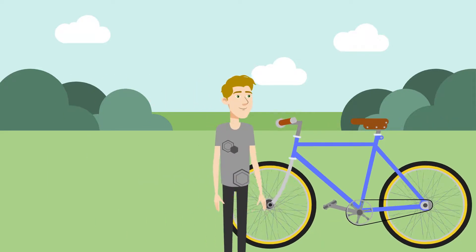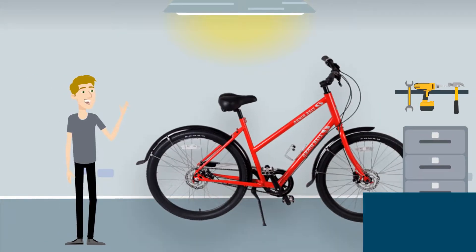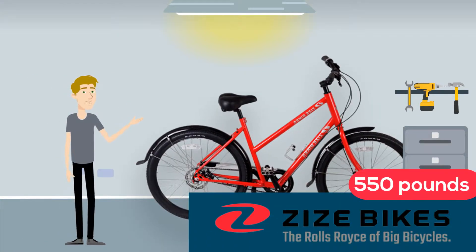Most bikes are made to safely hold riders who weigh 200 pounds. Zeiss Bikes builds custom-designed bikes that hold 550 pounds.